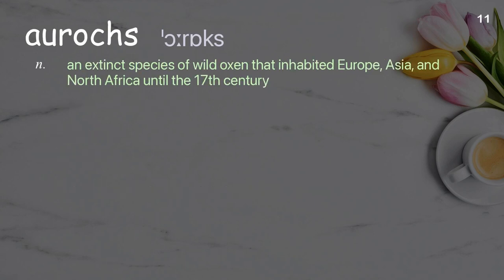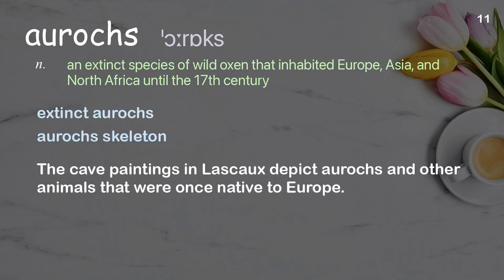Aurochs. An extinct species of wild oxen that inhabited Europe, Asia, and North Africa until the 17th century. Examples: extinct aurochs, auroch skeleton. The cave paintings in Lascaux depict aurochs and other animals that were once native to Europe.